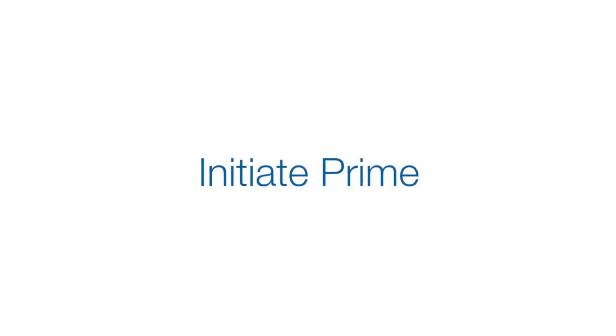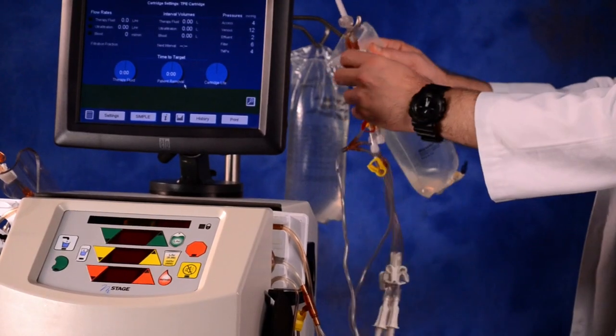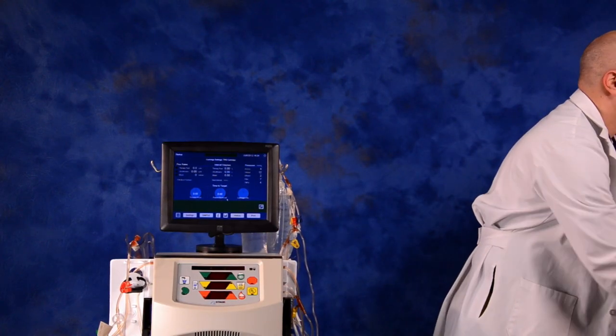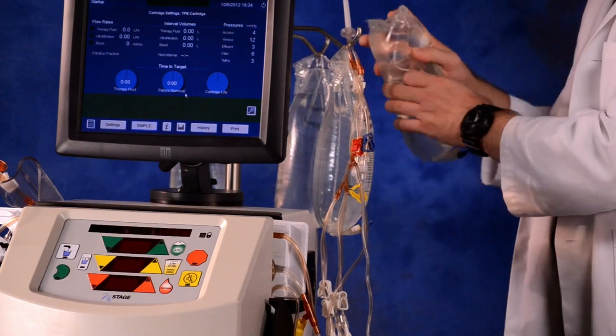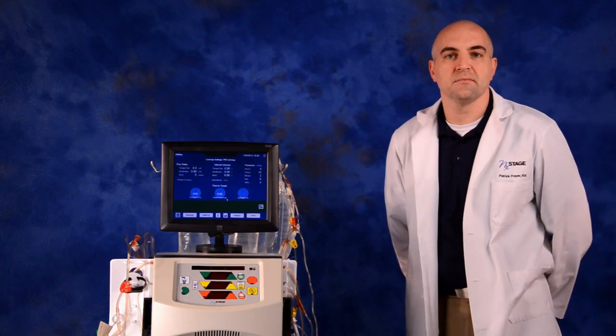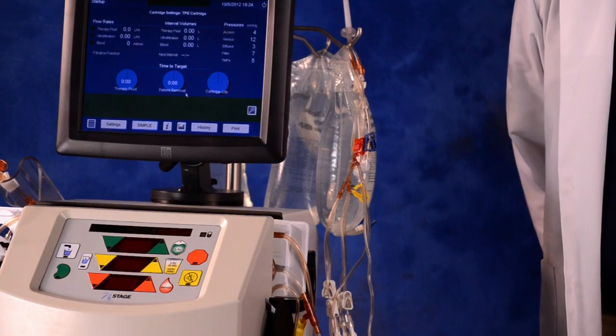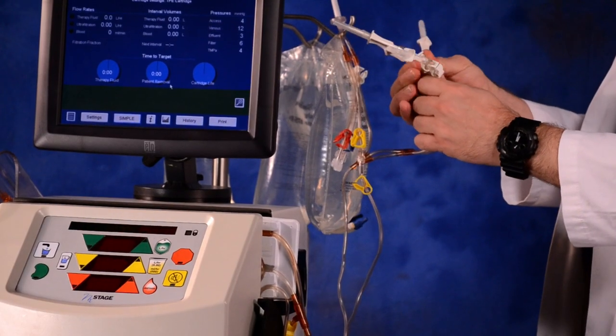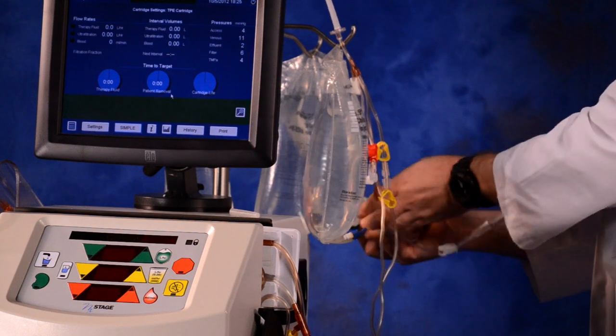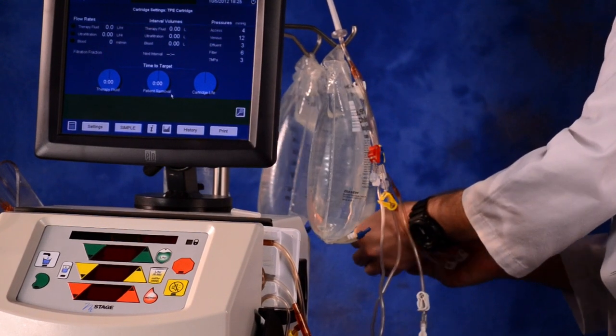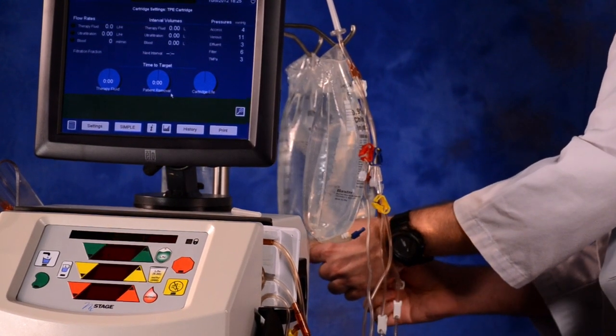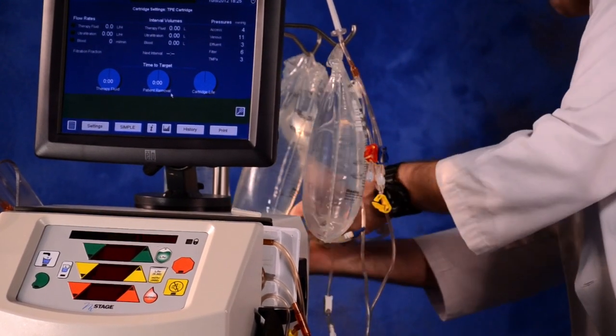We will continue with initiate prime. Hang a one liter bag of normal saline. Hang an additional two to four one liter bags of normal saline on the IV pole. The third and fourth bag hung will give you approximately 30 to 45 minutes of total recirculation time without exhausting the fluid. Clamp all four white clamps on the priming spikes. Insert the priming spikes into the additional one liter bags of normal saline and keep the white clamps closed. Insert the recirculation spike into the one liter of normal saline until the saline bag is flush with the disc on the spike.